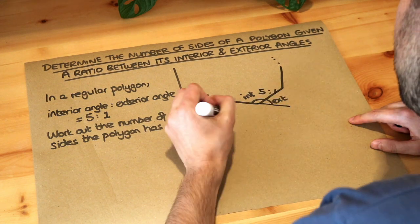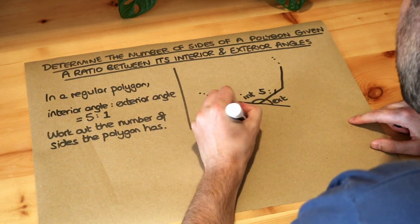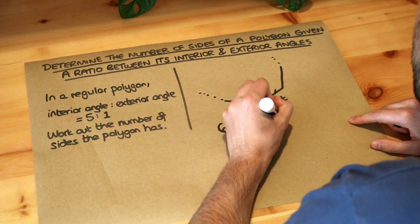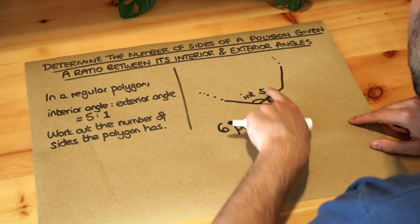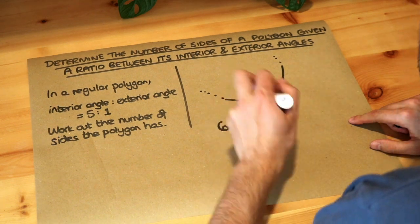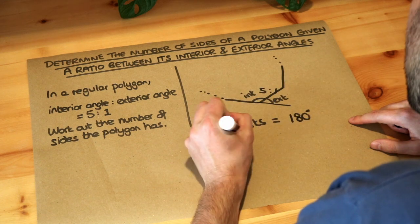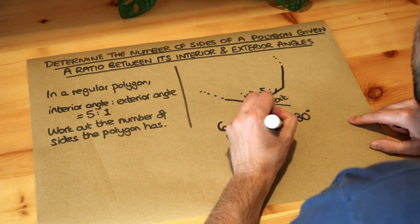5 plus 1 is 6, so 6 parts in that ratio represents the total angle, which is 180 degrees. That means one part, if we divide by 6, is 180 degrees divided by 6, which is 30 degrees.